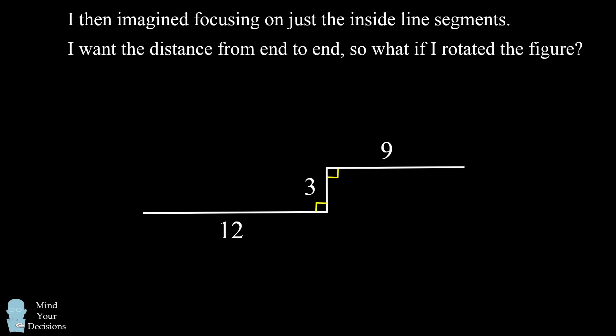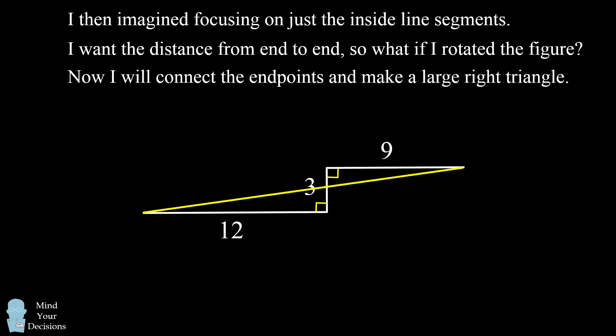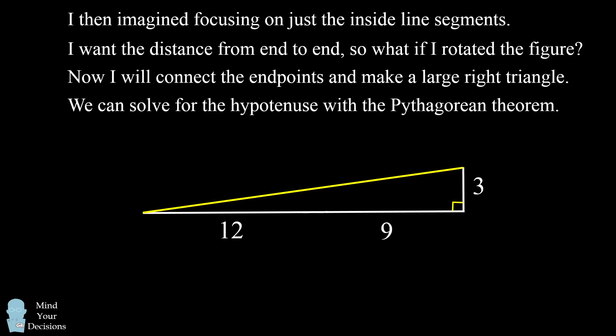Then it struck me. I connected the end points of these line segments. And then I realized we basically have one large right triangle. I can move the length of 9 down to form one leg of this right triangle. And then I can move the length of 3 over to create another leg of this right triangle.